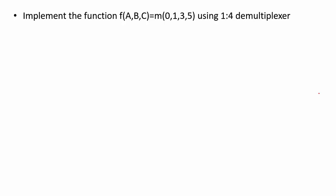Here we are given: implement the function f = Σm(0,1,3,5) using a 1-to-4 demultiplexer. To determine the number of select lines, compare this demultiplexer with its general form 1-to-2^n. A 1-to-4 demultiplexer can be written as 1-to-2^2, so n equals 2, meaning there are 2 select lines. However, the number of input variables in the problem is 3.